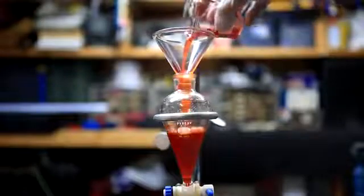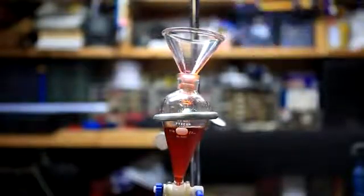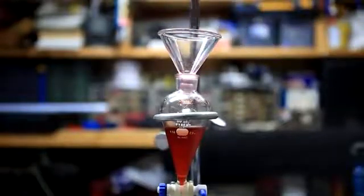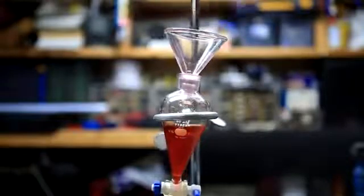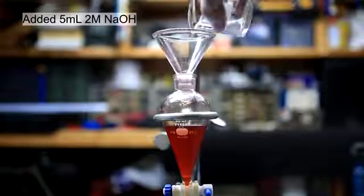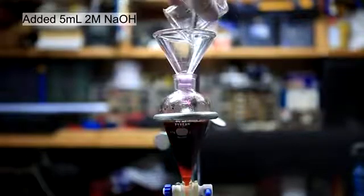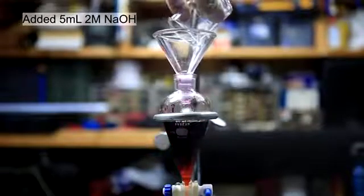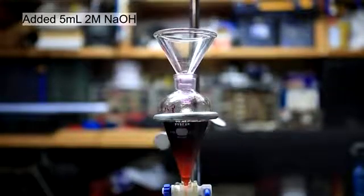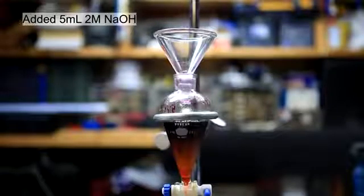The dichloromethane extract is poured back into the separatory funnel and the beaker is washed twice with a small amount of DCM. To this was added 5 milliliters of 2 molar sodium hydroxide. In this step, we're converting phenolphthalein into a water-soluble salt which has its characteristic purple color.